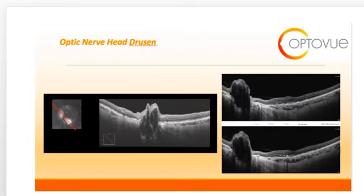Optic nerve head drusen is often mistaken for papilledema. However, it is a congenital abnormality. Optic nerve drusen are abnormal globular collections of protein and calcium, which accumulate in the optic nerve.